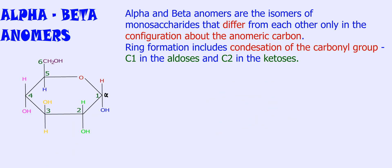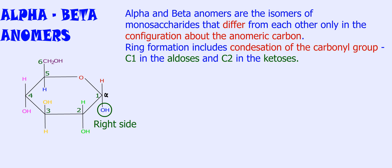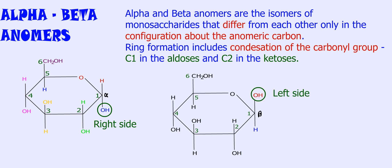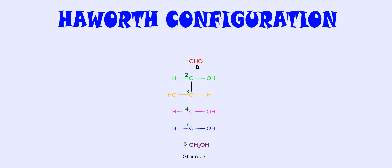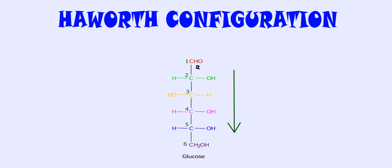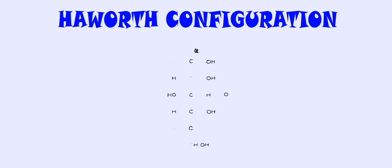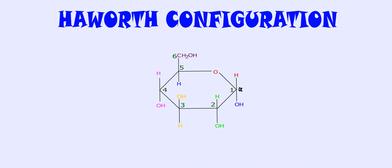The carbonyl carbon atom in the cyclic form is called the anomeric carbon, and it can exist in two different forms: alpha, with the hydroxyl group to the right, or beta, with the hydroxyl group to the left. In Haworth configuration, all groups to the right of carbons are oriented down, while all groups to the left of carbons are oriented up, except those around carbon 5, where the reverse orientation occurs.